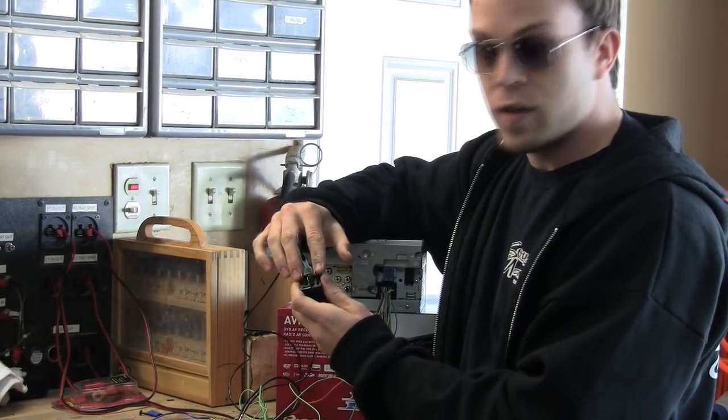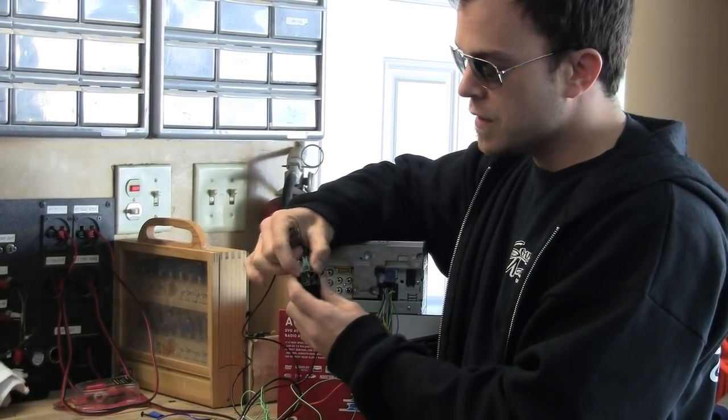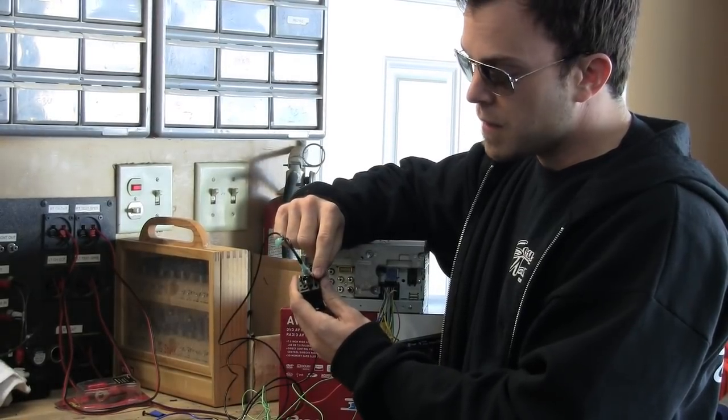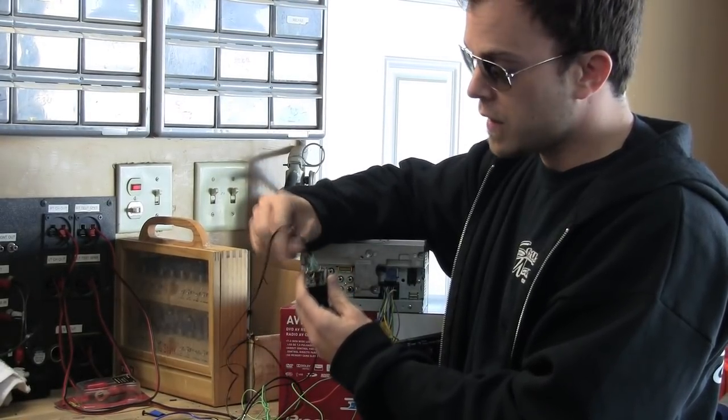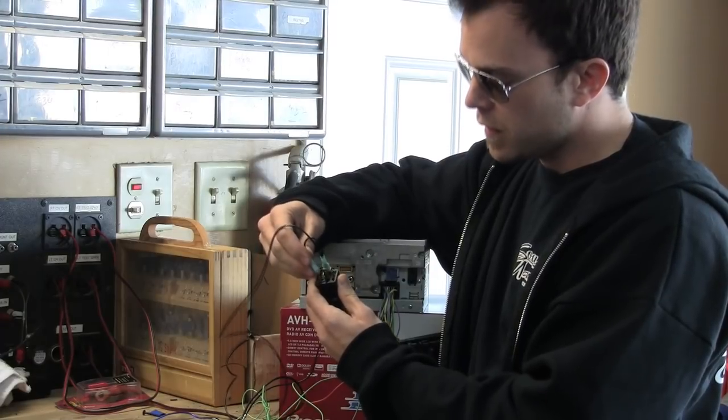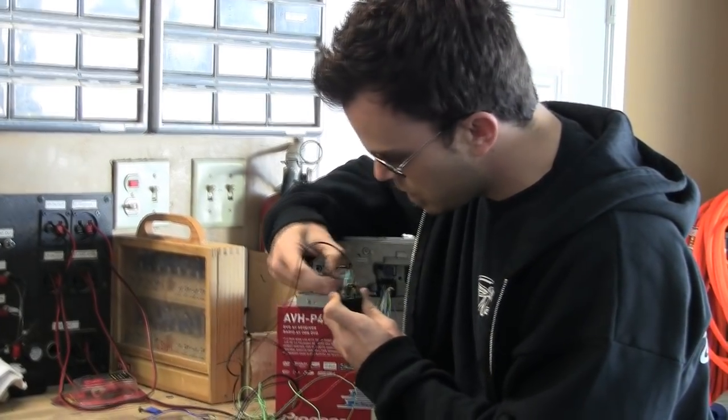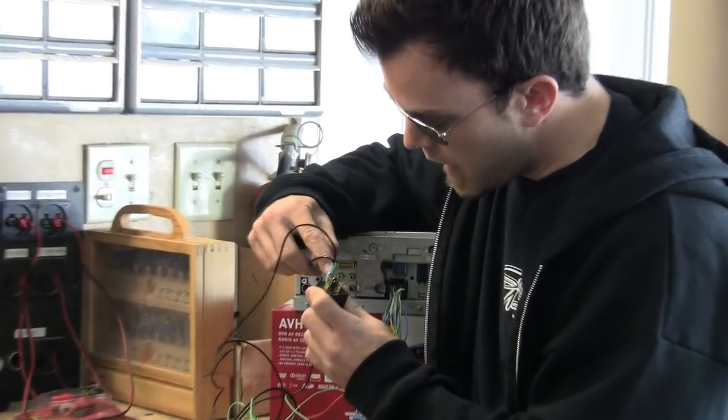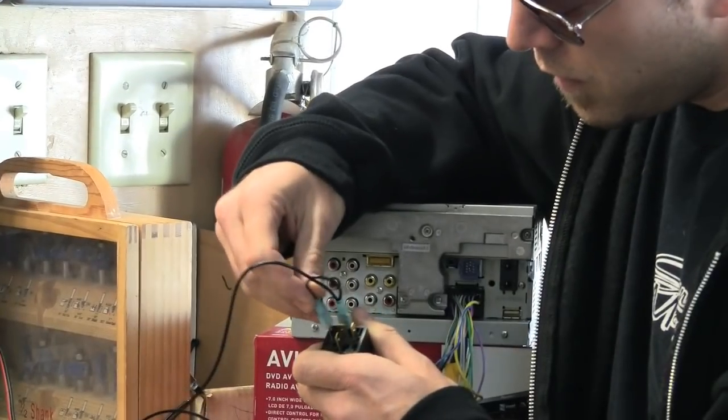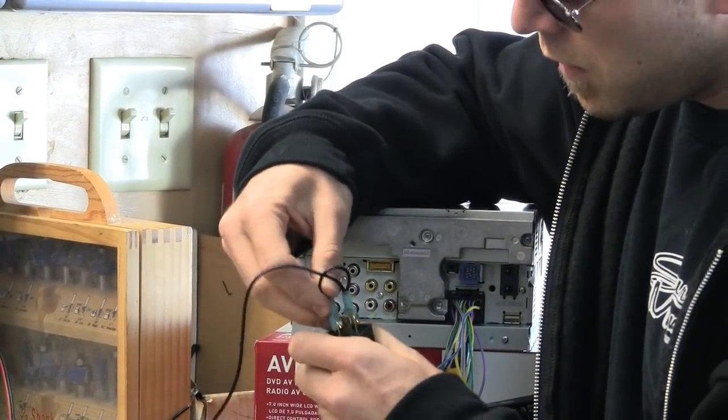These side pins turn the relay on. So once there's voltage, it clicks the relay on. This side can be ground, or this side can be ground. Just one side needs to be grounded. It doesn't matter which side. So I usually ground pins 86, which is the side one, and 87, which is the top one.